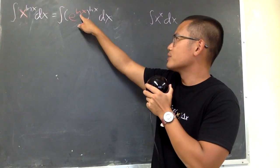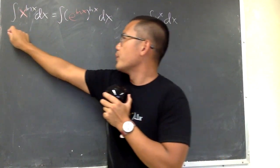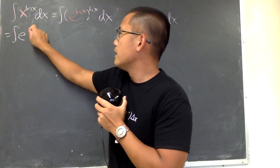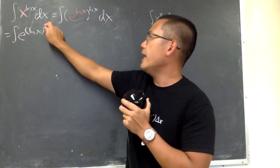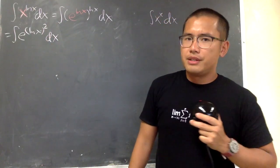In this case, we see that we can just multiply the powers. Therefore, we end up with the integral of e, and we have ln x times ln x, which is just ln x squared like that. Good.